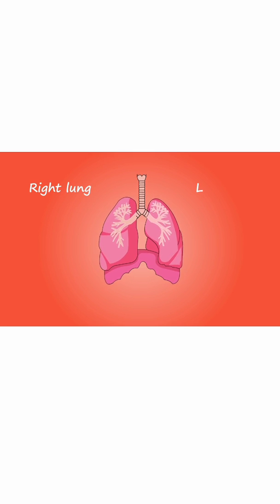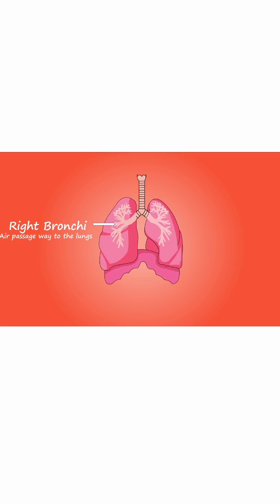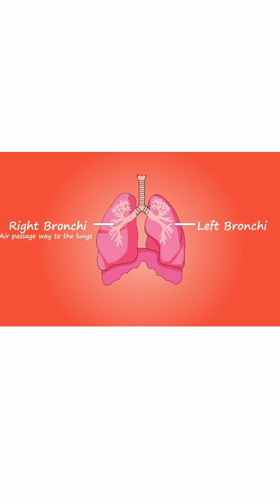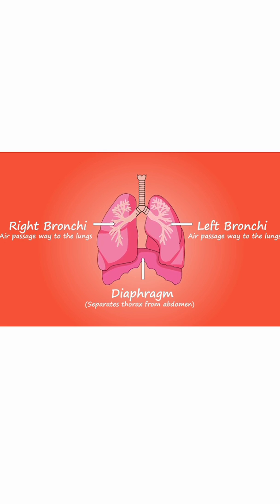When you breathe in air, the air travels from your nose, down your windpipe, and into your lungs. As the lungs branch into smaller and smaller airways, they end in specialized sacs called alveoli.